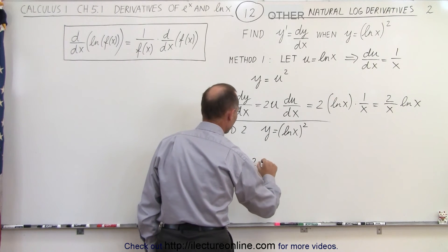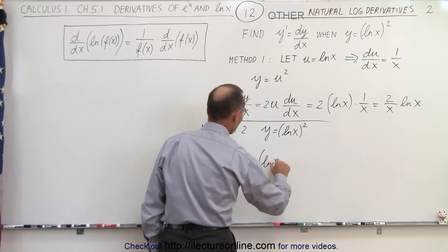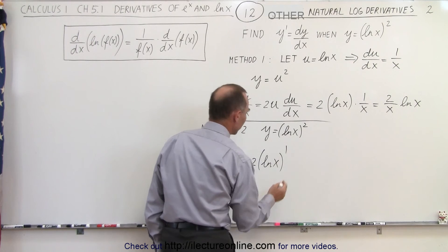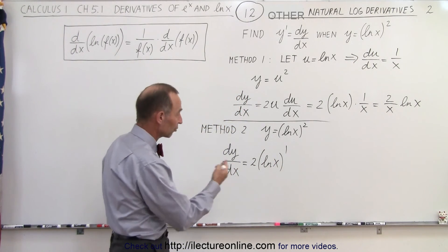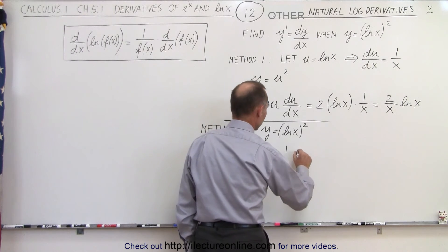we write 2 times the quantity, the natural log of x to the first power, times the derivative of what's inside the parentheses. And of course, the derivative of the natural log of x, well, that has to be equal to 1 over x.